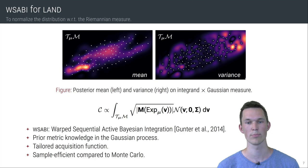We customize it by including prior metric knowledge in the Gaussian process and also propose a novel acquisition function which is tailored to the manifold setting. Our experiments show that this approach enables faster integration than Monte Carlo without sacrificing on accuracy.